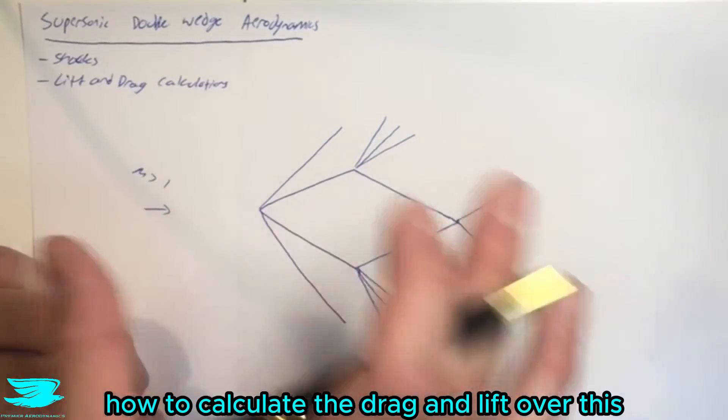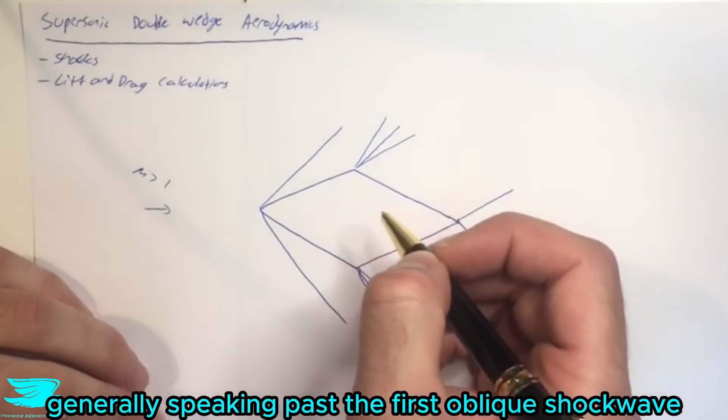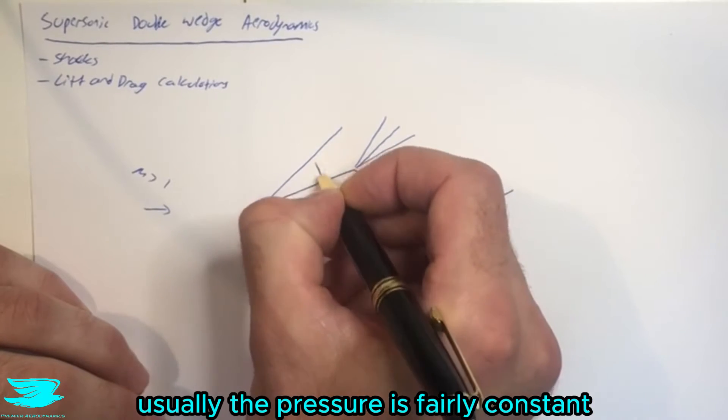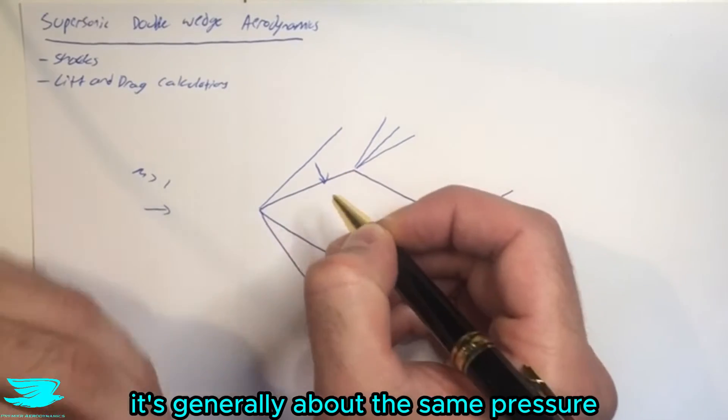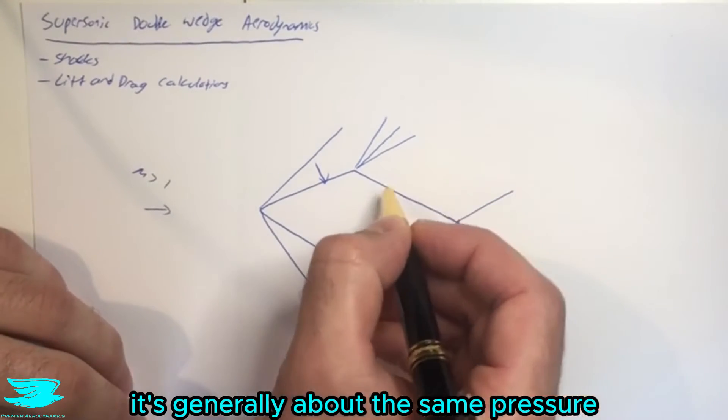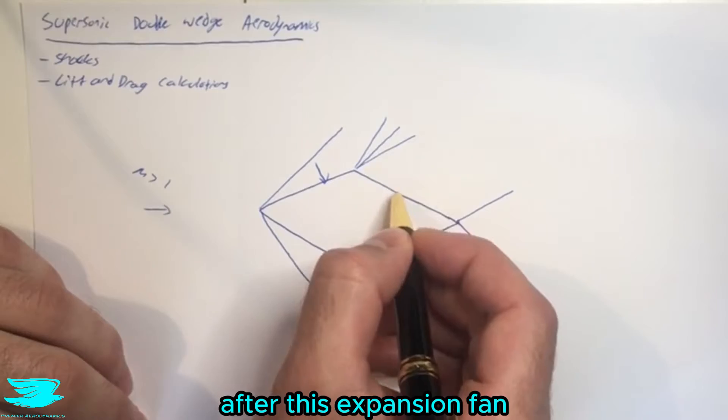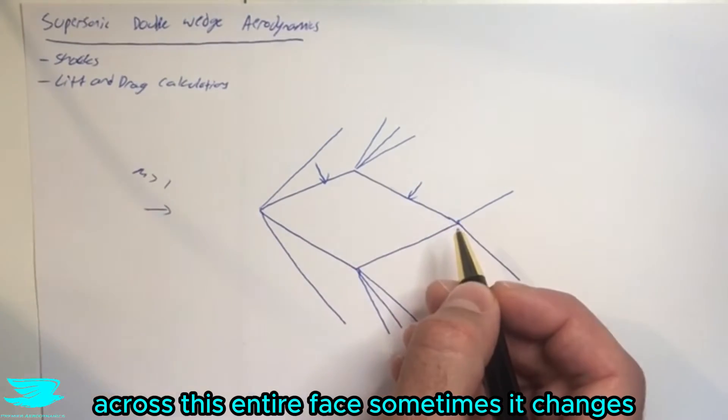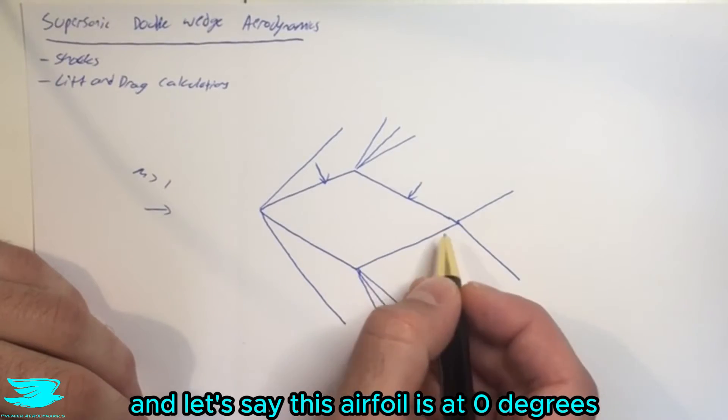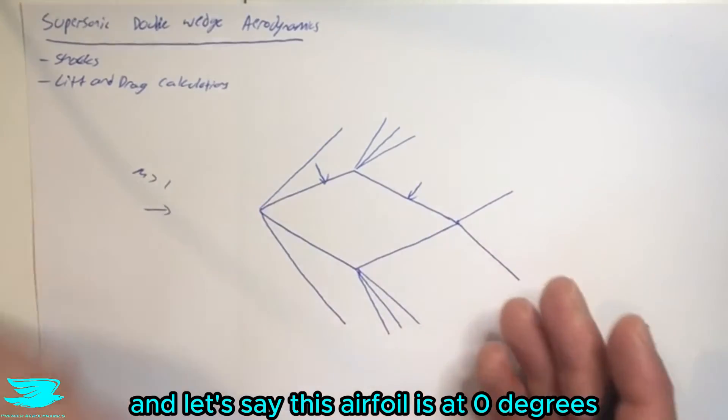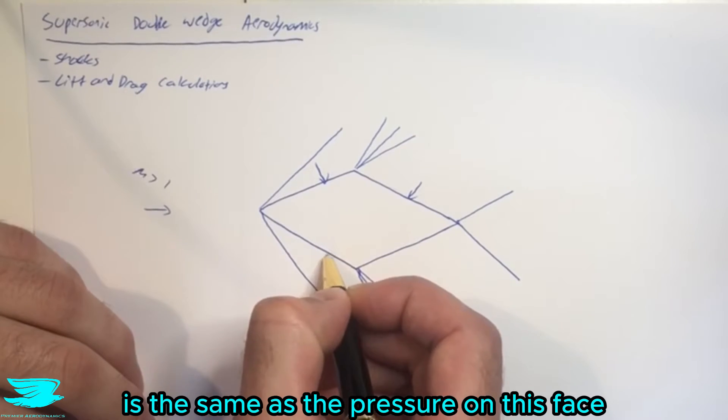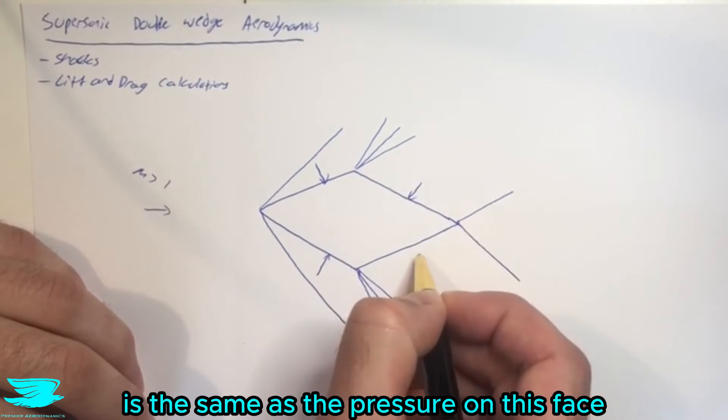How do we calculate the drag and lift over this? Well, generally speaking, past the first oblique shockwave, usually the pressure is fairly constant. So along this entire face, it's generally about the same pressure. After this expansion fan, sometimes it is the same pressure across this entire face, sometimes it changes. And let's say this airfoil is at zero degrees. So we can say that the pressure on this face is the same as the pressure on this face.